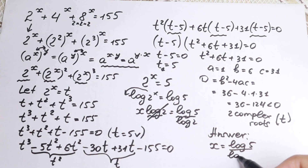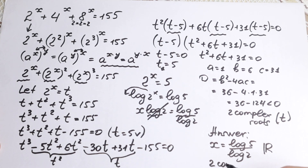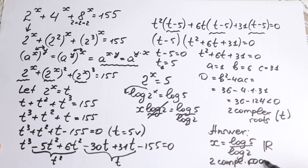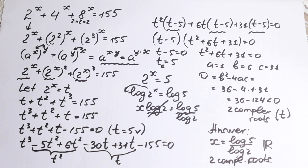So our final answer for real number roots is x equals log 5 over log 2, plus two complex roots. That's my solution to this problem. Write your comments, suggestions, or your own approach — I'd love to read them. Thank you so much for watching, see you in the next video, have a great day!